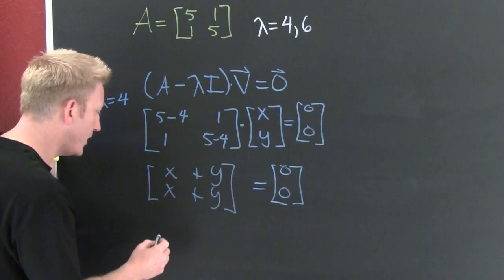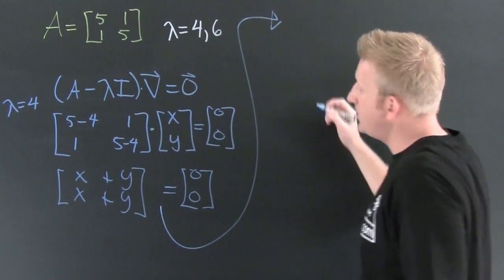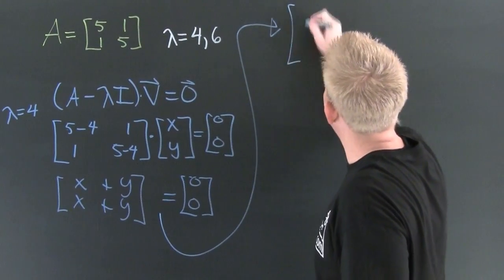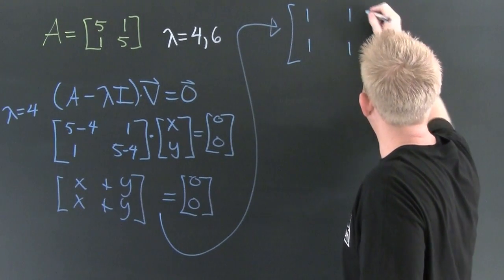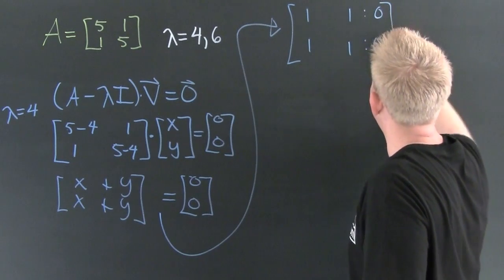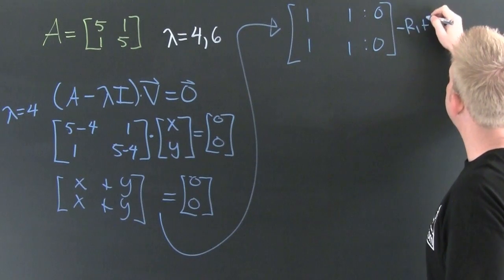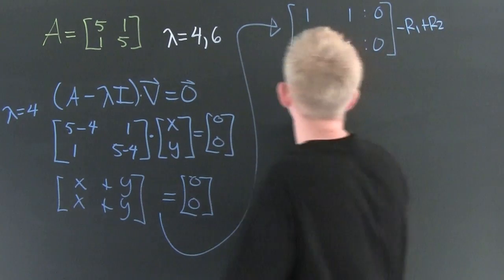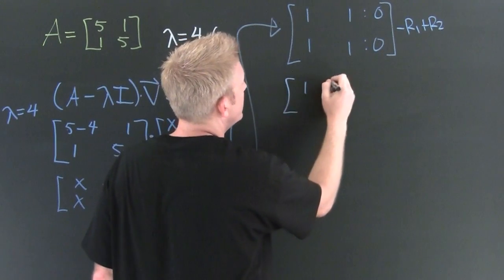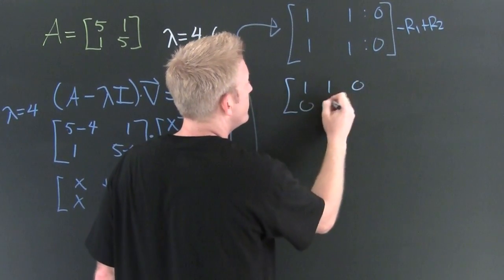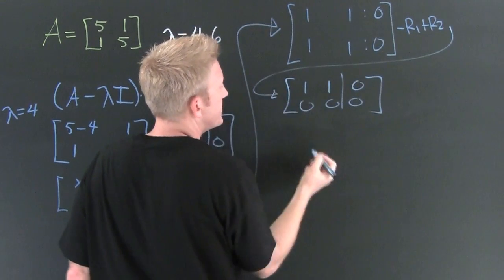My augmented matrix is going to get me 1, 1, 0 and 1, 1, 0. Here I'm going to take minus row one and add it to row two. So then this is going to be 1, 1, 0 and 0, 0, 0. That's when I do this.